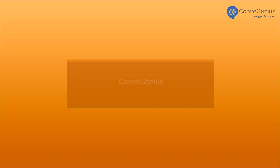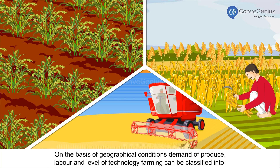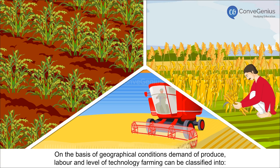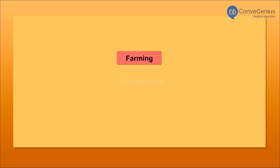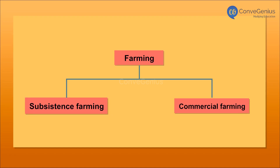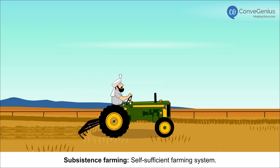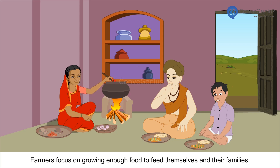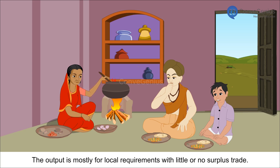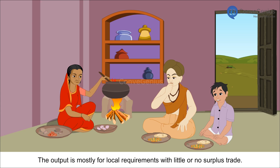Types of Farming: On the basis of geographical conditions, demand of produce, labour and level of technology, farming can be classified into Subsistence Farming and Commercial Farming. Subsistence Farming is a self-sufficient farming system. Farmers focus on growing enough food to feed themselves and their families. The output is mostly for local requirements with little or no surplus trade.